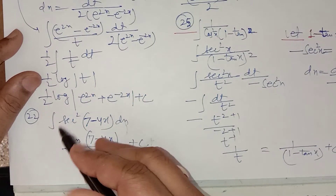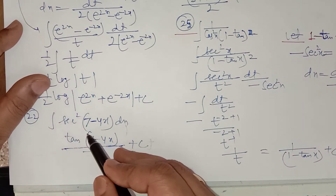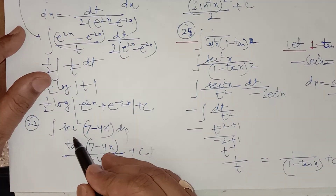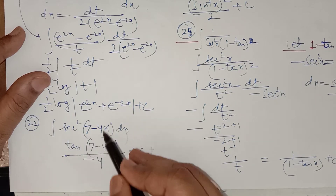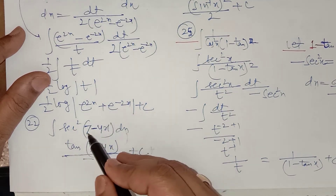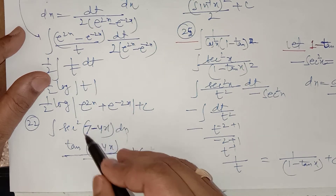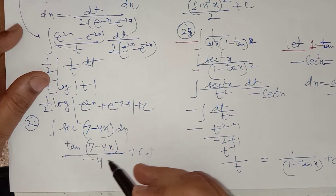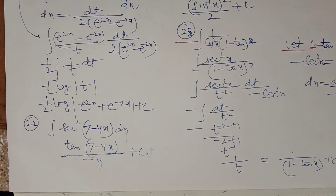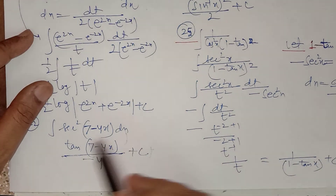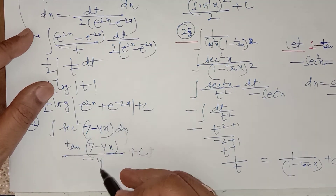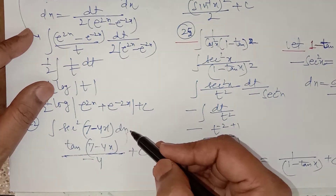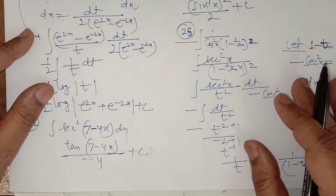Question number 22 is very easy. You can do it directly: sec square integration is tan(7 minus 4x) divided by the derivative of (7 minus 4x), which is minus 4. In integration, integrate the first function divided by the derivative of the inner function when it is a composite function. You can also do it by letting 7 minus 4x equal to t.